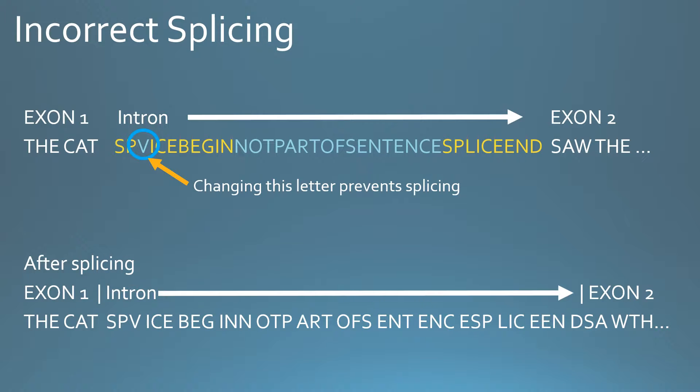But what happens if we change one of the letters which marks the beginning and end of the splicing? If we change an L to a V, it no longer says 'splice begin,' so the cell doesn't realize that that's something it's supposed to take out. It just thinks all of that sequence of letters is a coding sequence, so you get a bunch of nonsense. That's basically what happens in a gene if you have what's called a splicing mutation.